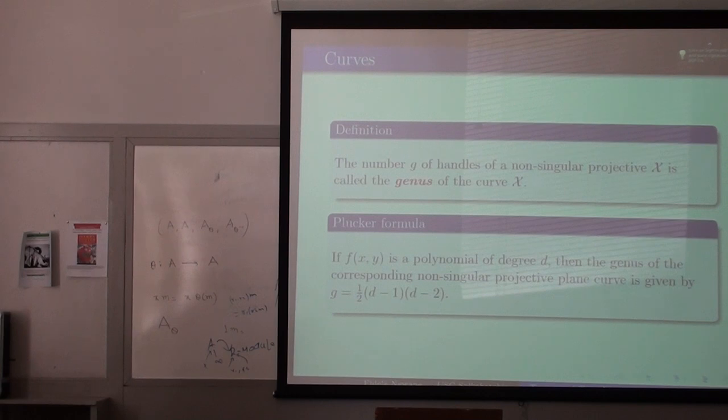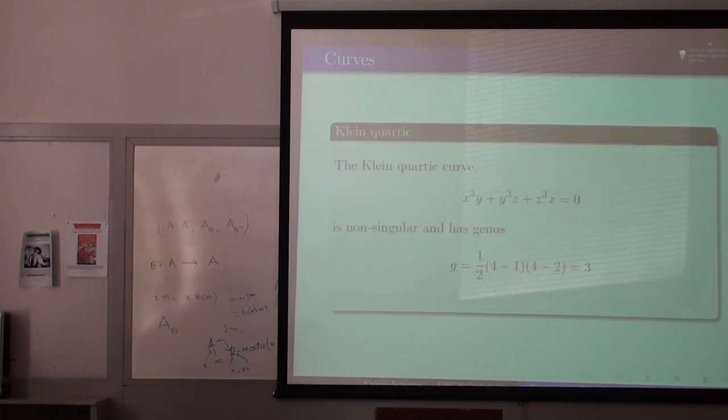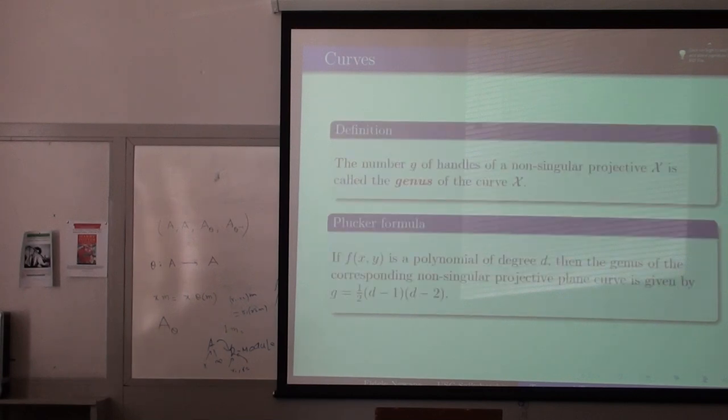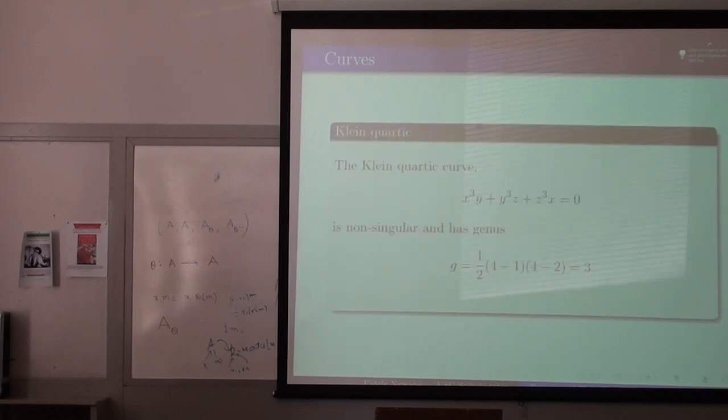Here is the Plücker formula. It says that if you have a polynomial f(x,y) of degree t, then the genus of the corresponding non-singular projective plane curve is given by one-half the degree minus one times degree minus two. I'll give you an example. If I look at the Klein quartic curve, the degree of this Klein quartic is four. So the genus, if you were to plug it into the formula we saw previously, you have that to be three. This gives you an example of how you compute the genus of a given curve. It's important, and we'll see later on how important that is.